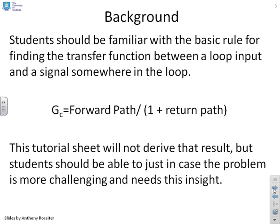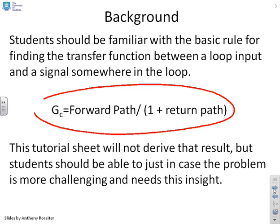Background information: just to remind you that we're going to use this formula here. If you've got a loop input and a signal somewhere in the loop, the transfer function between them can be written as forward path — the blocks between the loop input and the signal — divided by one plus return path, where return path is everything in the loop. We're not going to derive that result but we are going to use it.